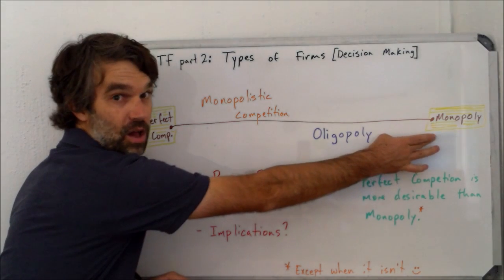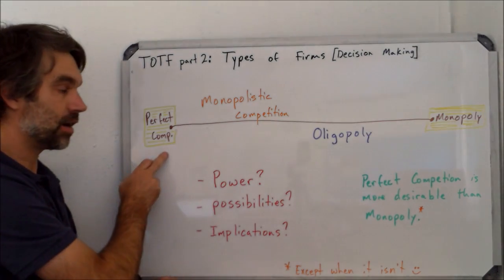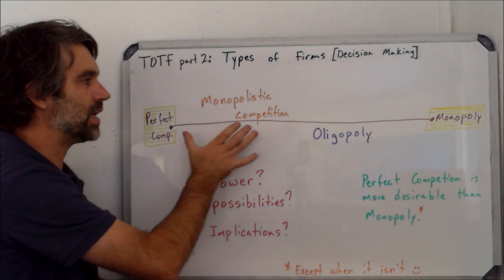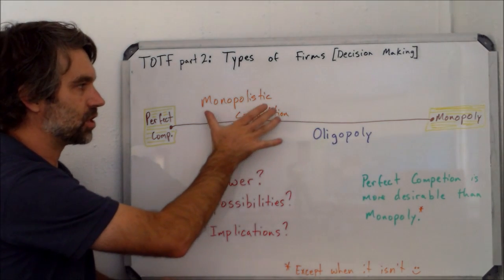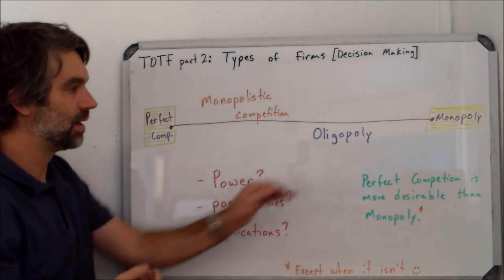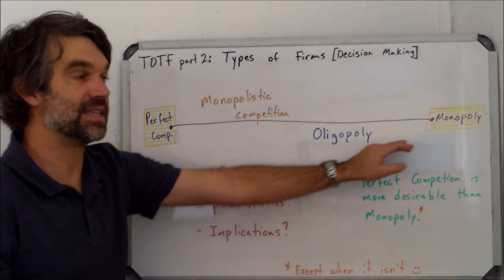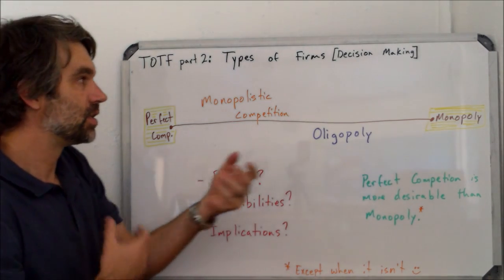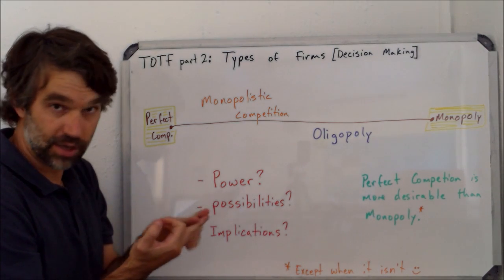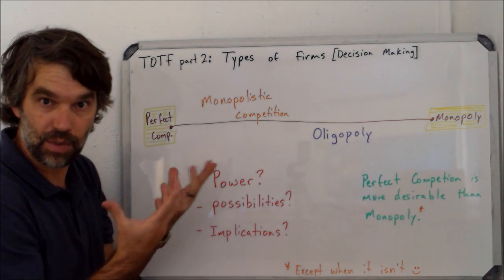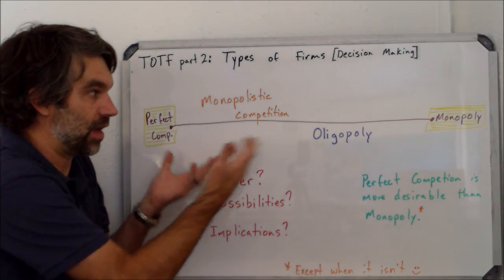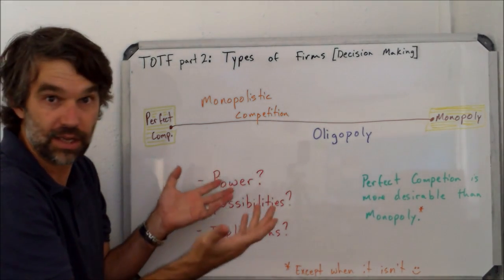So here, one business has all control, and here, every business has no control. In between, we find two other models: monopolistic competition, which tends to be closer to perfect competition, and oligopoly, which tends to be closer to monopoly. We'll look at those four different types and analyze how the anatomy of a firm might change based on what type of firm it is.